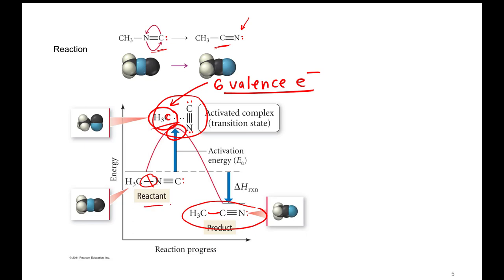Since the octet rule — having eight valence electrons — is what makes many elements stable, this position where the carbon atom only has six valence electrons is very unstable, i.e., very high potential energy. So in between the reactant and product, even though the product is lower potential energy and more stable, this molecule has to go through this very high potential energy transition state. That is what leads to activation energies. Every single reaction is going to have a transition state that is very high potential energy for some reason — too few valence electrons, too many valence electrons, or not the right number of bonds for a stable formal charge.